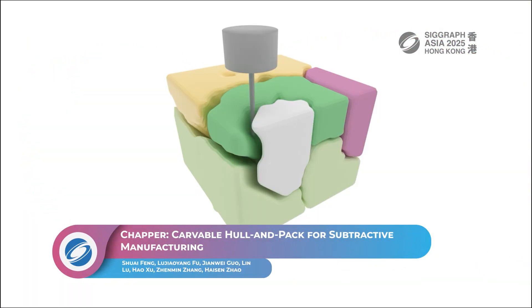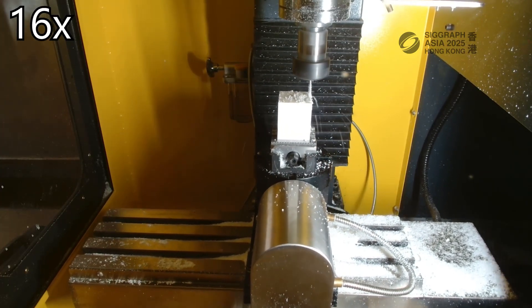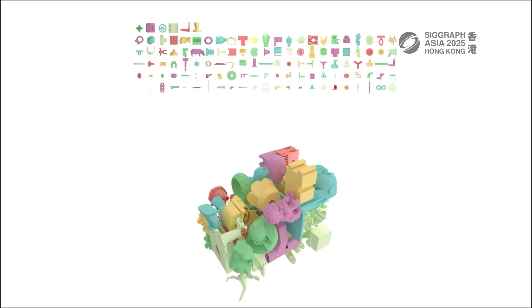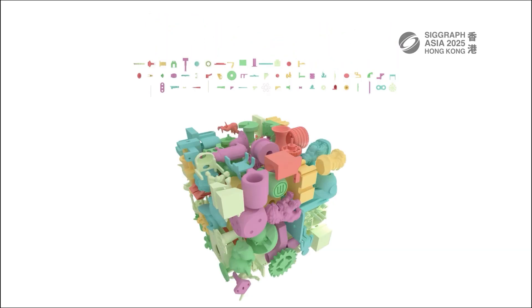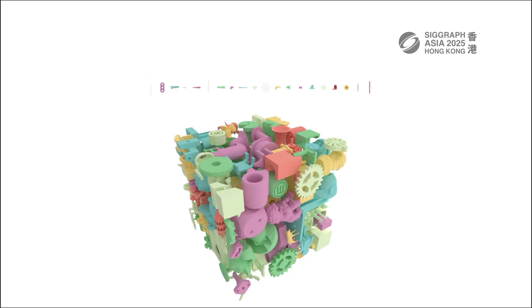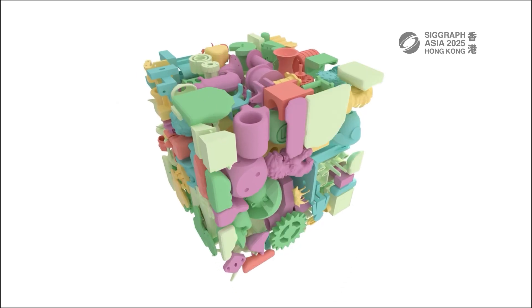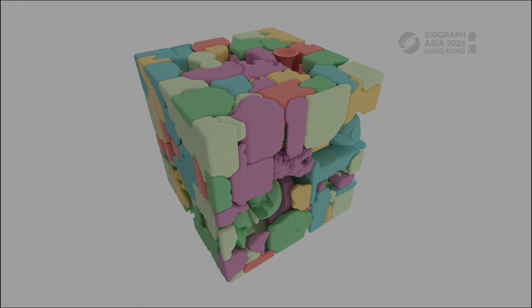Not only have these researchers solved the problem of packing irregular objects into a container, but also made them carve-able for use in subtractive manufacturing. First, an order of packing and disassembly is computed. Collisions are solved using voxels, while a novel metric determines carve-ability. A Voronoi-based volume decomposition method is used to generate the carving hulls and feasible cutting toolpaths.